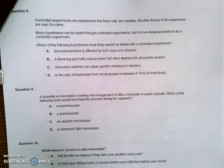Controlled experiments are experiments that have only one variable. All other factors in the experiment are kept the same. Many hypotheses can be tested through controlled experiments, but it is not always possible to do a controlled experiment. Which of the following hypotheses most likely cannot be tested with a controlled experiment? And that would be D. In the wild chimpanzees from social groups composed of 10 to 20 individuals.